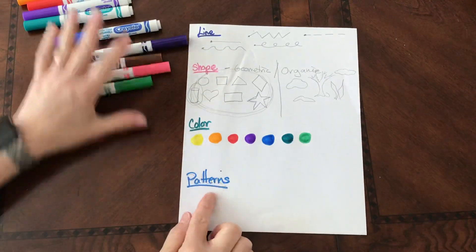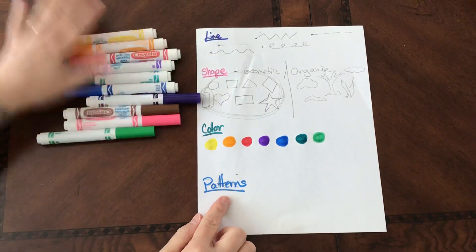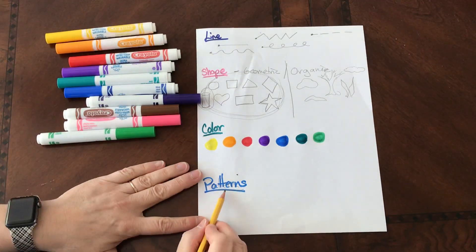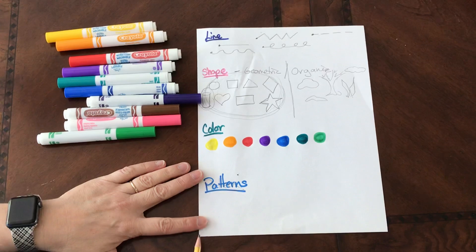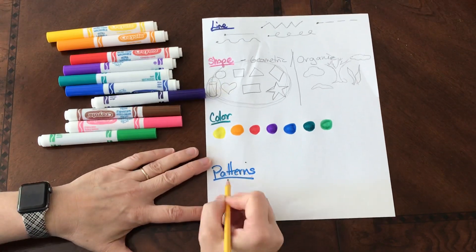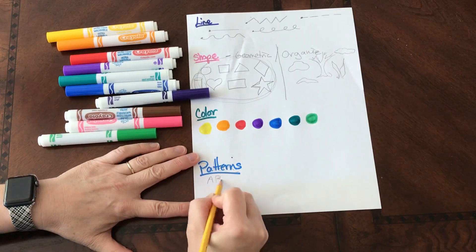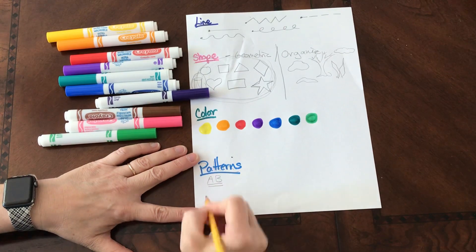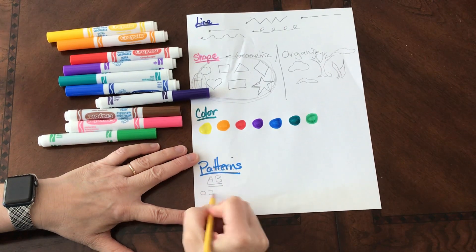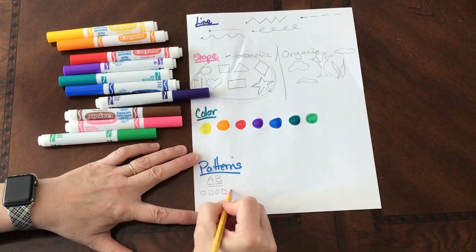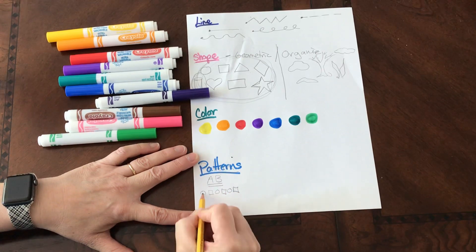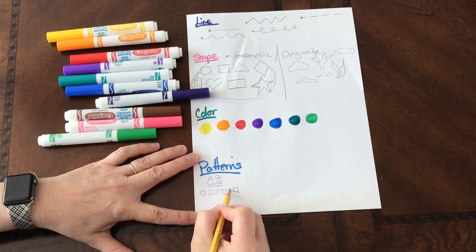And then the next thing we have is a pattern. Now there's different types of patterns, and I want to talk about the different types of patterns. We have a pattern that is an A-B pattern. So it might be circle, square, circle, square, circle, square. A-B-A-B-A-B.